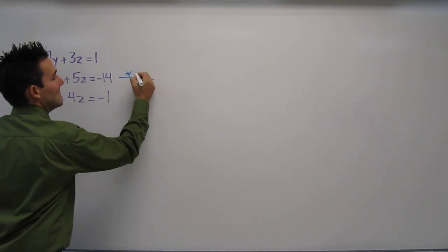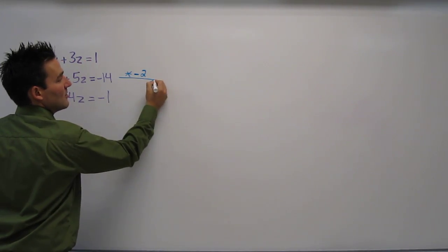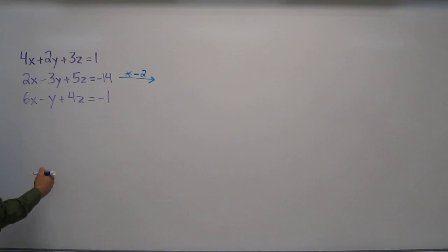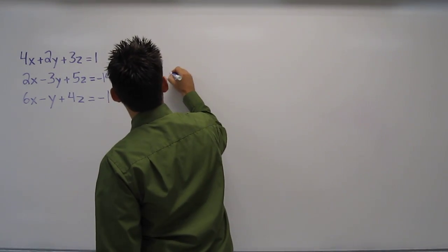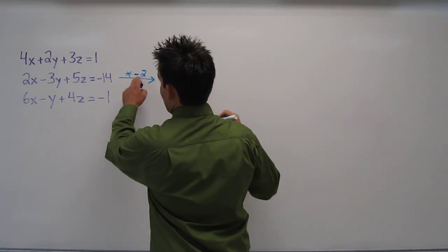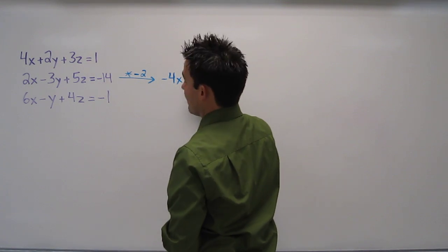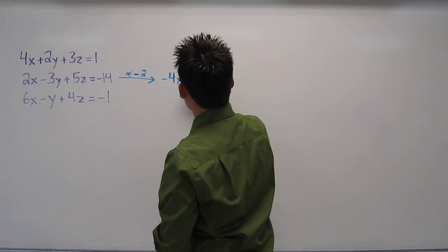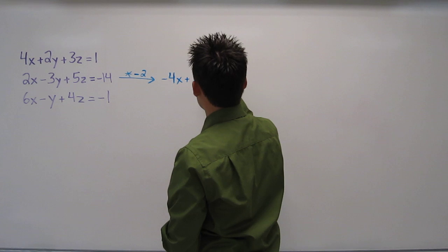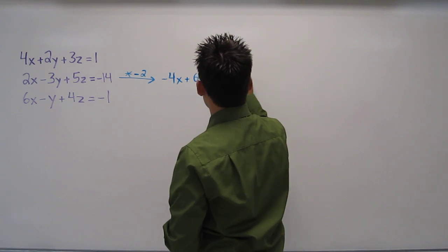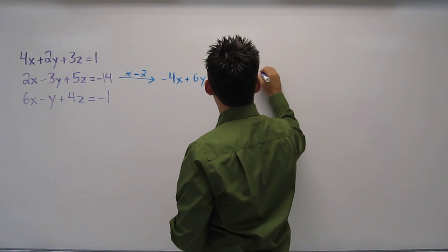So times negative 2, and I'll draw an arrow showing where the equation will be written. Negative 2 times 2 is negative 4x plus 6y minus 10z equals 28.